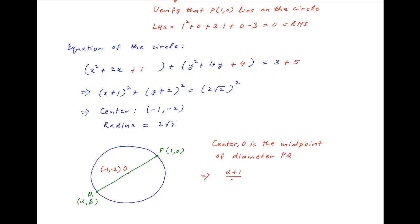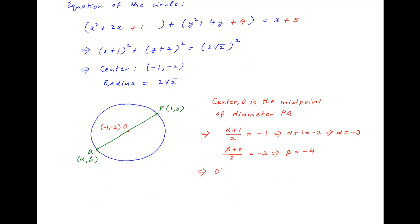Therefore (α+1)/2 equals -1 and (β+0)/2 equals -2. The first equation implies that α+1 equals -2, which means that α equals -3, and the second equation implies that β equals -4. Therefore, the other end of the diameter is the point (-3,-4), which is the required answer.